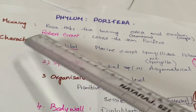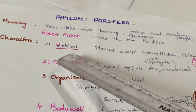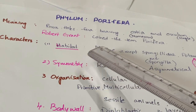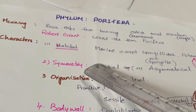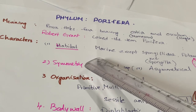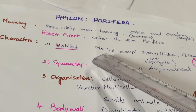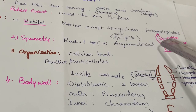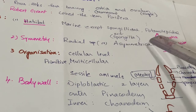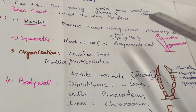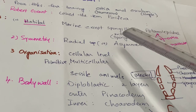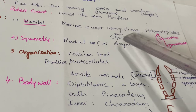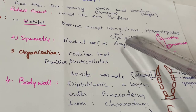Coming to the general characters of Porifera — habitat. These are mostly marine animals, meaning they live in salt water, that is sea water. Exceptions are family Spongillidae and Potamolepidae, which are two families of the class Demospongia. These two families are freshwater.